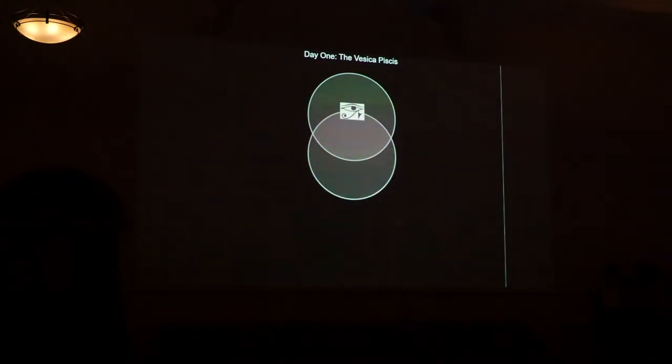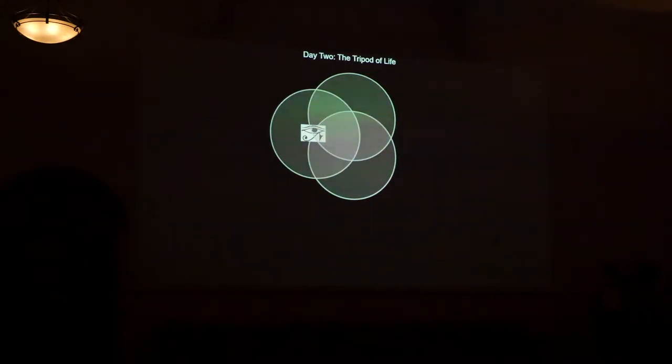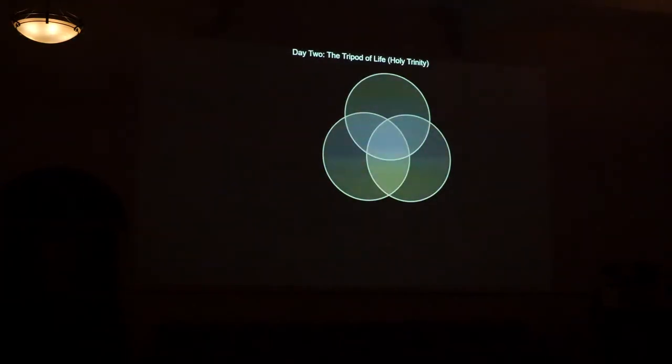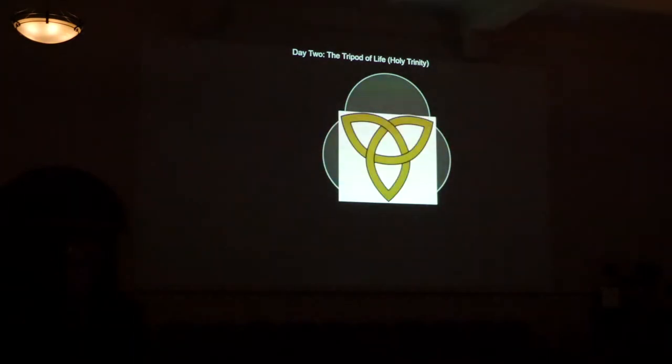I want you to think of all of these movements or creation of spheres as representing another day. So in day one, the Vesica Piscis is created. In day two, the Triangle of Life is created again. Consciousness moves to the next point in the sphere, creates itself again. Let's reorientate the shape. When we reorientate this, we actually get the Holy Trinity, which we see in lots of religious doctrines.